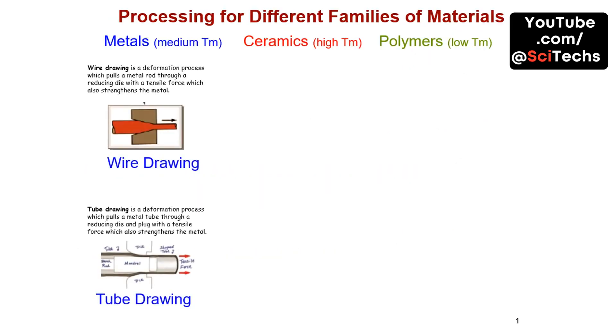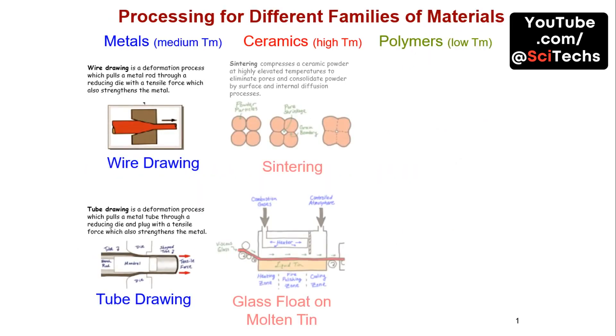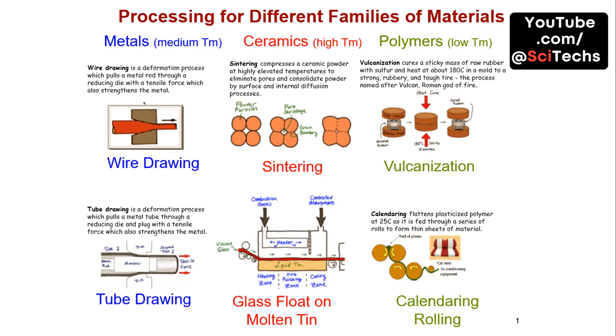Processing methods like wire drawing, sintering, and vulcanization are used for different materials. Each method is tailored to enhance the material's properties for specific applications.